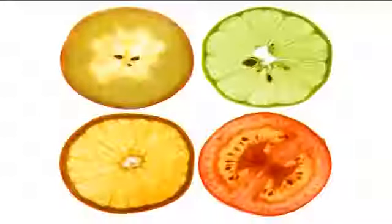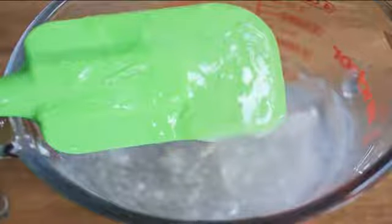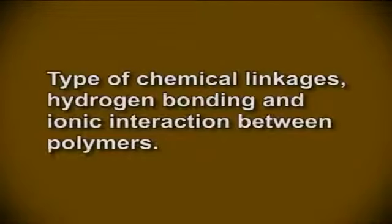Some polysaccharides disperse rapidly in water, some disperse as swollen particles, and some are insoluble in water. Some can form either translucent or opaque gels at low and high concentrations, and some do not form gels at all. Such variations among polysaccharides are attributed to the nature of the monosaccharide, type of chemical linkages, hydrogen bonding, and ionic interactions between the polymers.